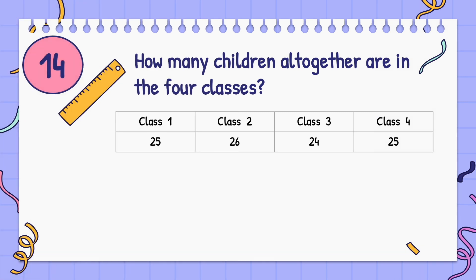How many children altogether are in the 4 classes? Class 1: 25 children, Class 2: 26 children, Class 3: 24 children, Class 4: 25 children. Answer: 100 children.